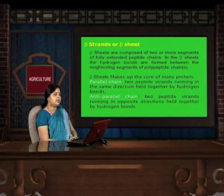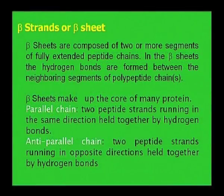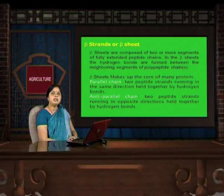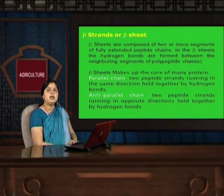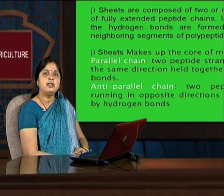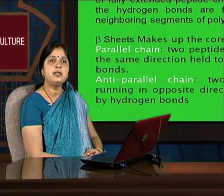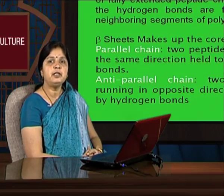The another secondary structure level of protein is beta strand or beta sheet. Beta sheets are composed of two or more segments of fully extended peptide chain. In the beta sheet, hydrogen bonds are formed between neighboring segments of polypeptide chain. In the alpha helix, intra-chain hydrogen bonds are formed between amino acids, while in the beta sheet, inter-chain hydrogen bonds are formed between two polypeptide chains.